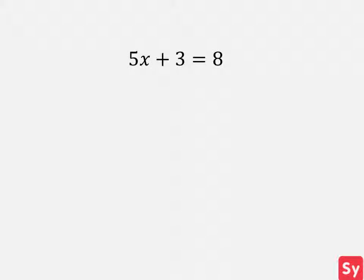Let's see some examples. Here is our first example. We have 5x plus 3 equals 8. There isn't anything to distribute or combine, so we can go ahead and move on to undoing the additive step.